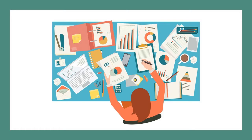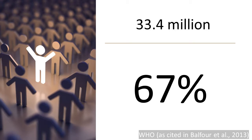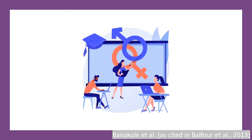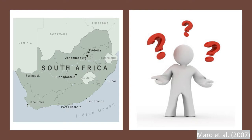I have done some more research about the impact of sport for development and here is what I found. The World Health Organisation has estimated that 33.4 million people live with HIV and 67% of those people are based in sub-Saharan Africa. Half of the new infections occur in people aged between 15 and 24, and 12.6% of youth in South Africa have sex before their 14th birthday.